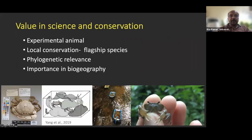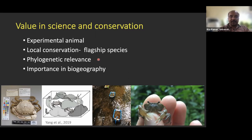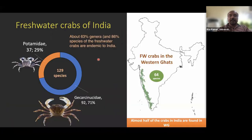Freshwater crabs also have scientific and conservation value. They are used as experimental animals in toxicological studies. As point endemics, they can be used as flagship species for initiating local conservation. They have phylogenetic relevance and an important role in biogeography due to their interesting global distribution patterns.